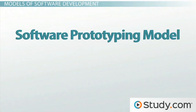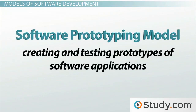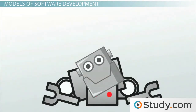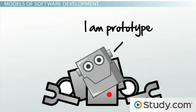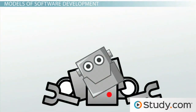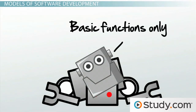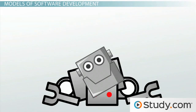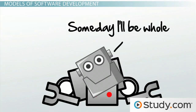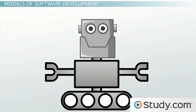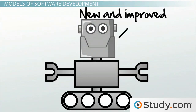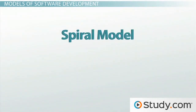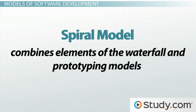The software prototyping model relies on creating and testing prototypes of software applications. A prototype is a simple, incomplete version of the software being developed. An initial prototype is developed that meets some of the very basic requirements, but lacks many of the details. The initial prototype is tested and reviewed, and the feedback is used to improve the prototype. The spiral model combines elements of various other components.